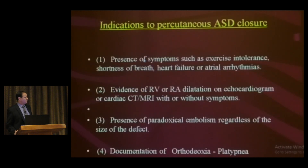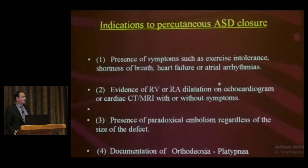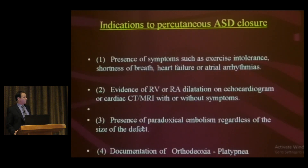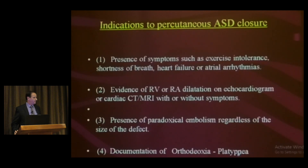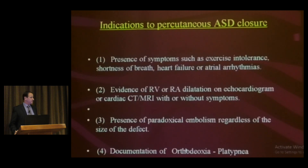Indications for closure include: presence of symptoms such as exercise intolerance, shortness of breath, heart failure, or atrial arrhythmias; evidence of right ventricular dilatation with volume overload; presence of paradoxical emboli — more commonly seen in PFO cases; and documentation of orthodoxia-platypnea syndrome.